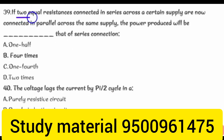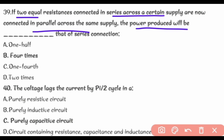If two equal resistances connected in series across a certain supply are now connected in parallel across the same supply, the power produced will be four times that of the series connection.